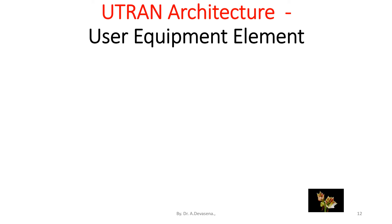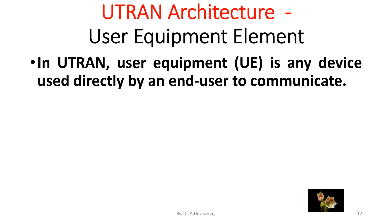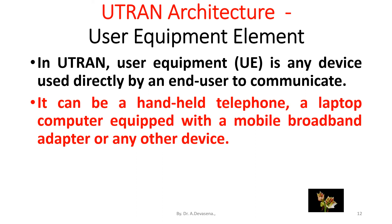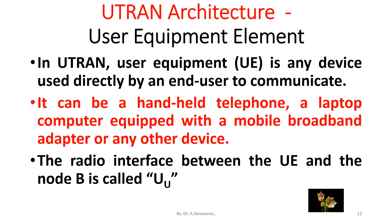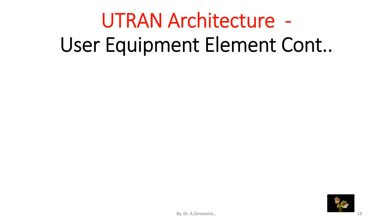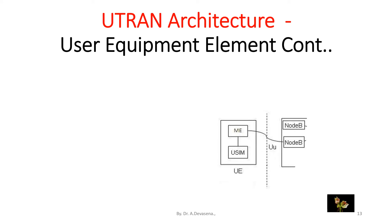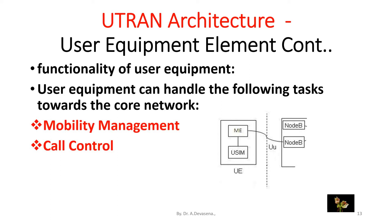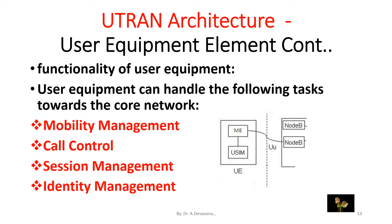In UTRAN, user equipment, that is UE, is any device used directly by an end user to communicate. It can be a handheld telephone, a laptop computer equipped with a mobile broadband adapter, or any other device. The radio interface between the UE and the Node B is called Uu. User equipment can handle the following tasks towards the core network: mobility management, call control, session management, and identity management.